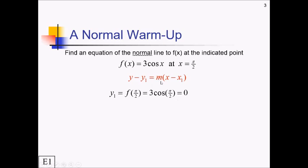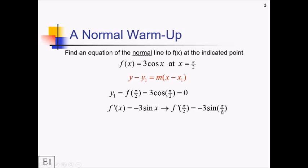Now we have to go ahead and find m. We can't find m for the normal line right away — we have to find m, the slope for the tangent line first. For that we just take the derivative of this function at x equals π/2. The general derivative of 3cos(x) is negative 3sin(x). Plugging in π/2: sine of π/2 is 1, so this is negative 3 times 1, which is negative 3.